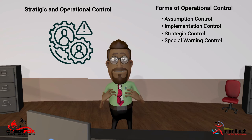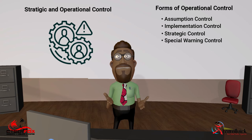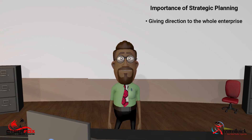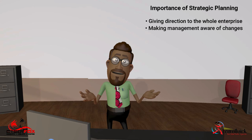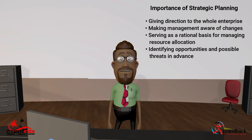Operational control systems are used for allocating and using the company's resources. The systems directly monitor and evaluate the daily activities of the company that are needed for implementing the strategies and achieving the objectives for the year. Strategic planning is very important for a number of reasons such as giving direction to the whole enterprise, making management aware of changes, serving as a rational basis for managing resource allocation, and identifying opportunities and possible threats in advance.